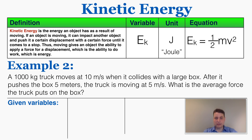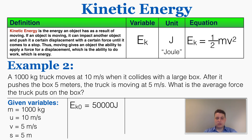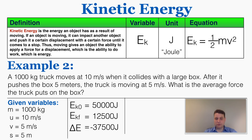Here's another example combining work and kinetic energy. A 1,000 kg truck moves at 10 m/s when it collides with a large box. After pushing the box 5 meters, the truck is moving at 5 m/s — what is the average force the truck puts on the box? The initial kinetic energy is 50,000 joules and the final kinetic energy is 12,500 joules, so the change in energy is negative 37,500 joules. That change in energy equals the work done by the truck — it's giving 37,500 joules of energy to the other object.